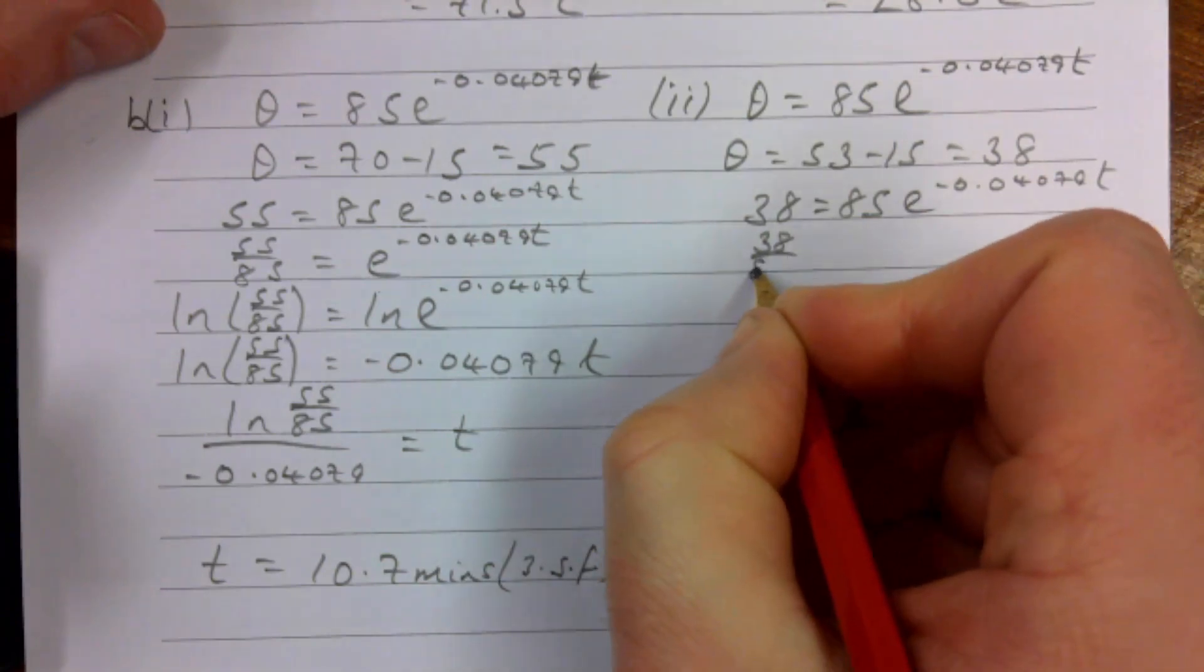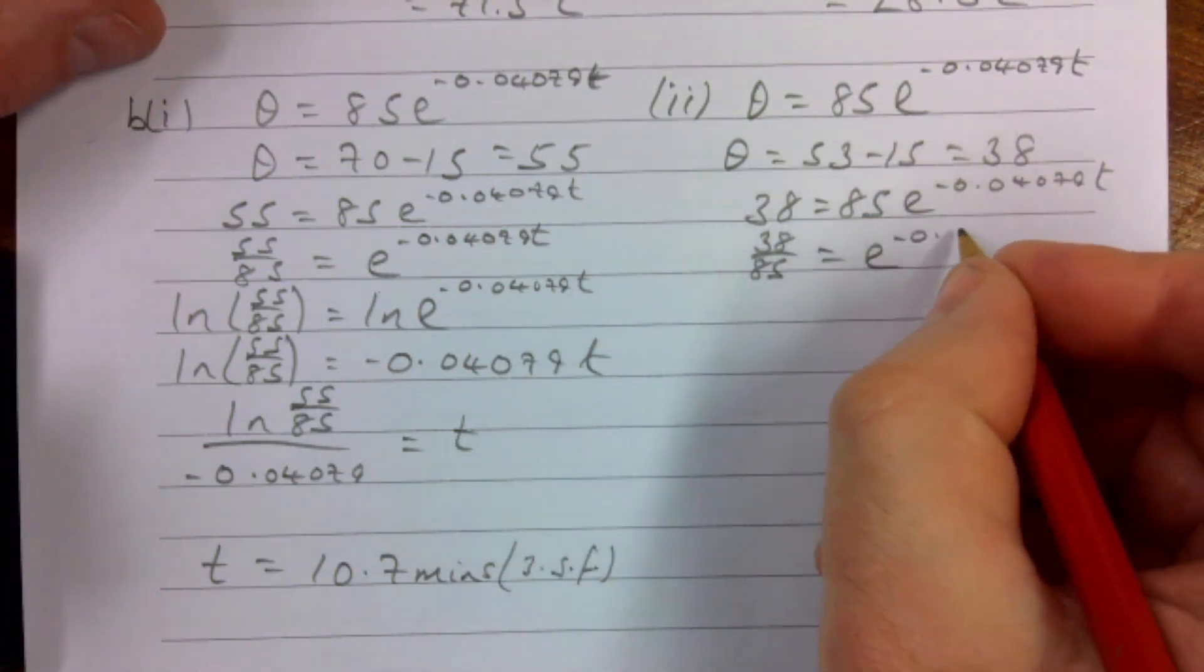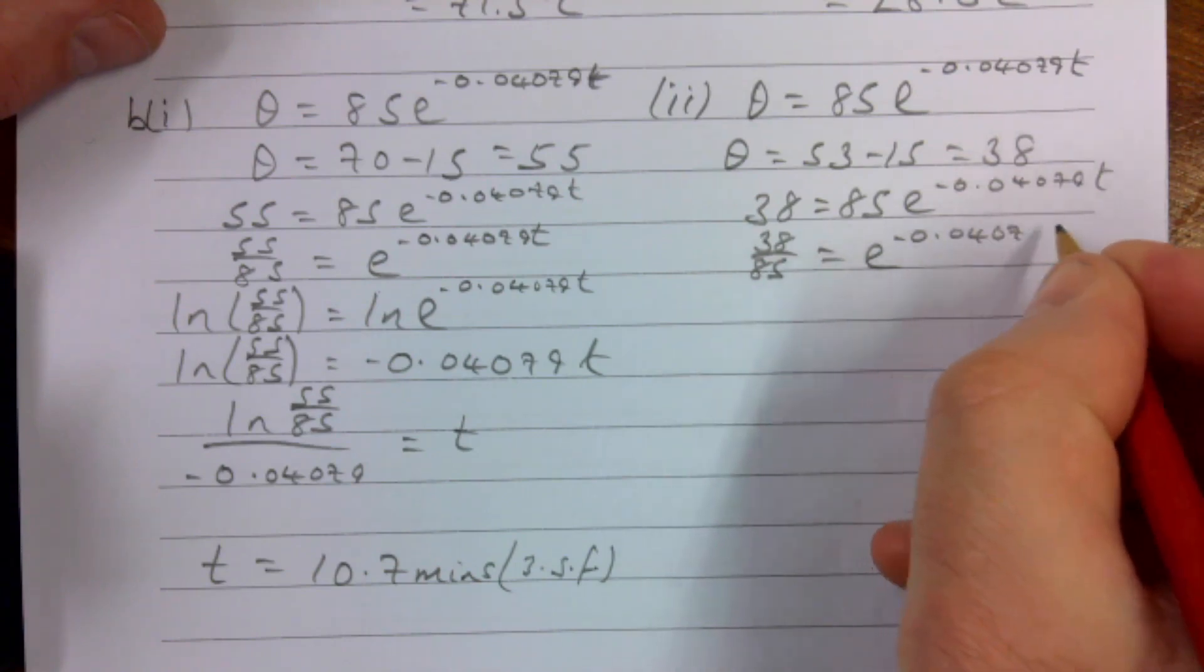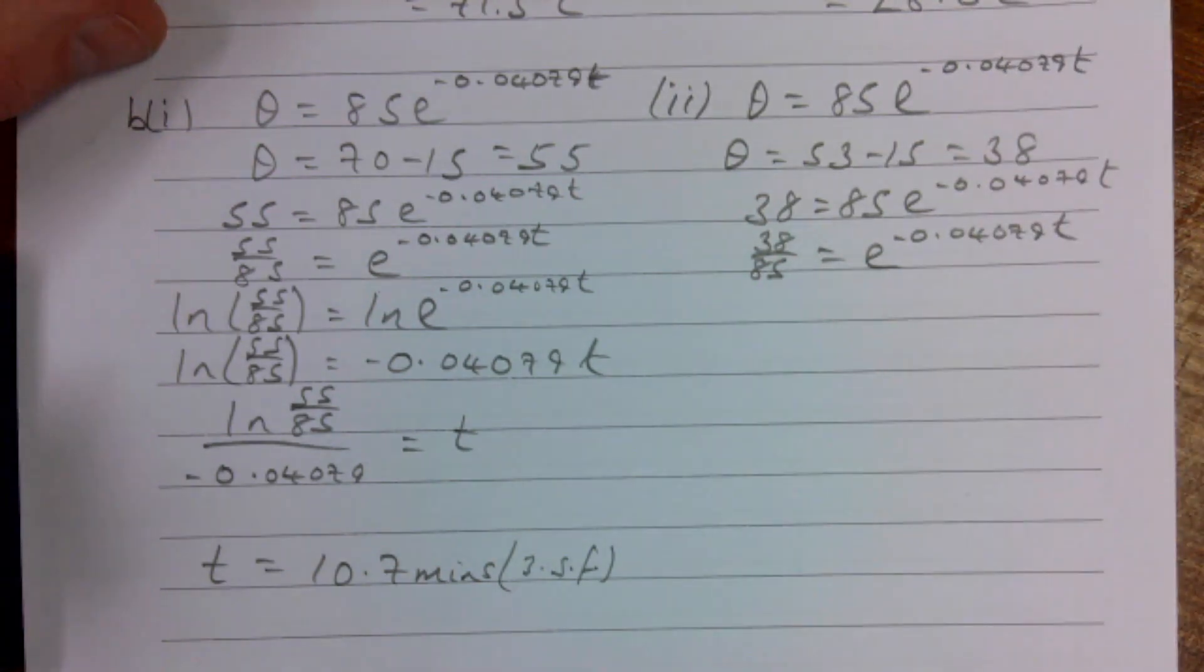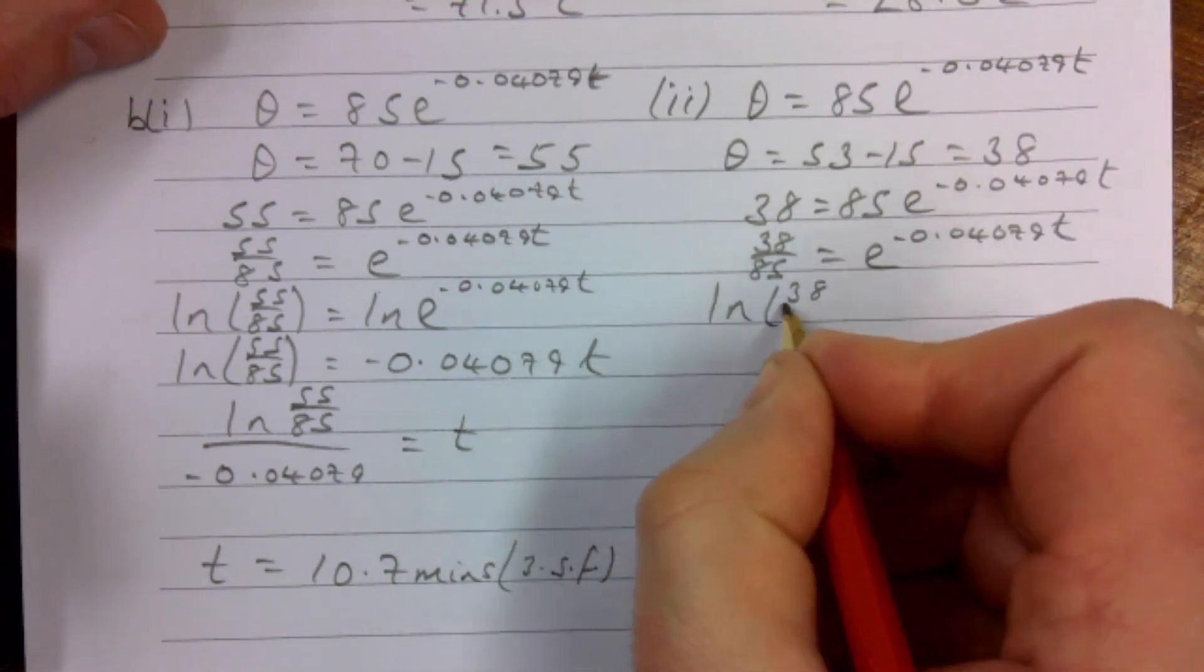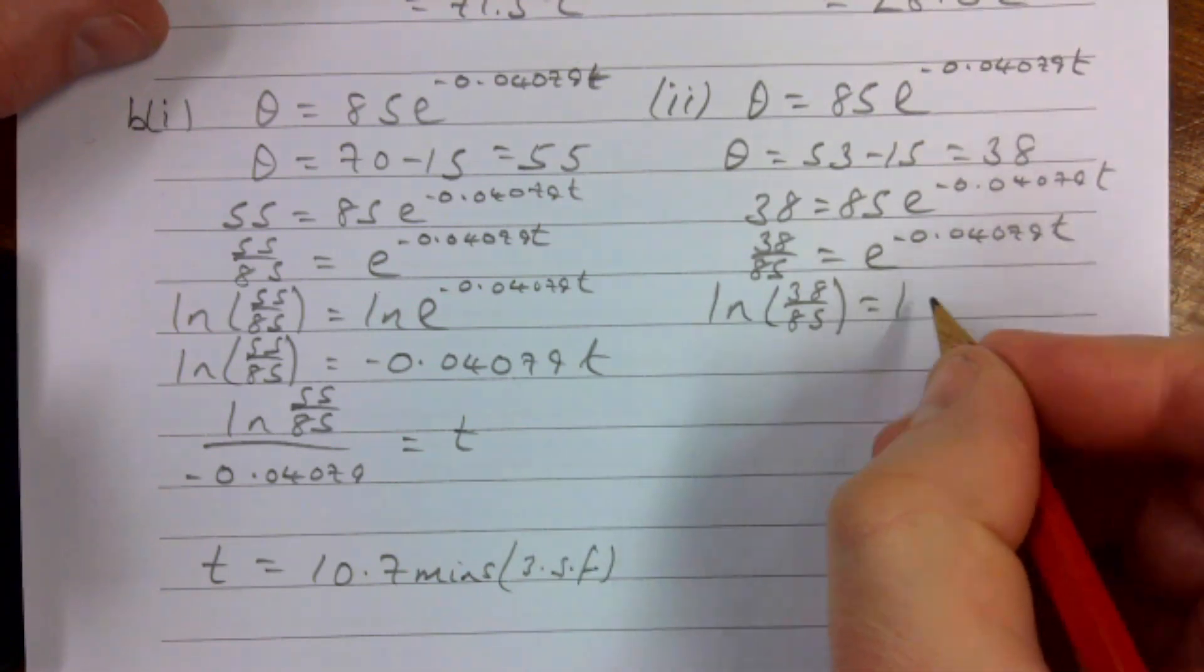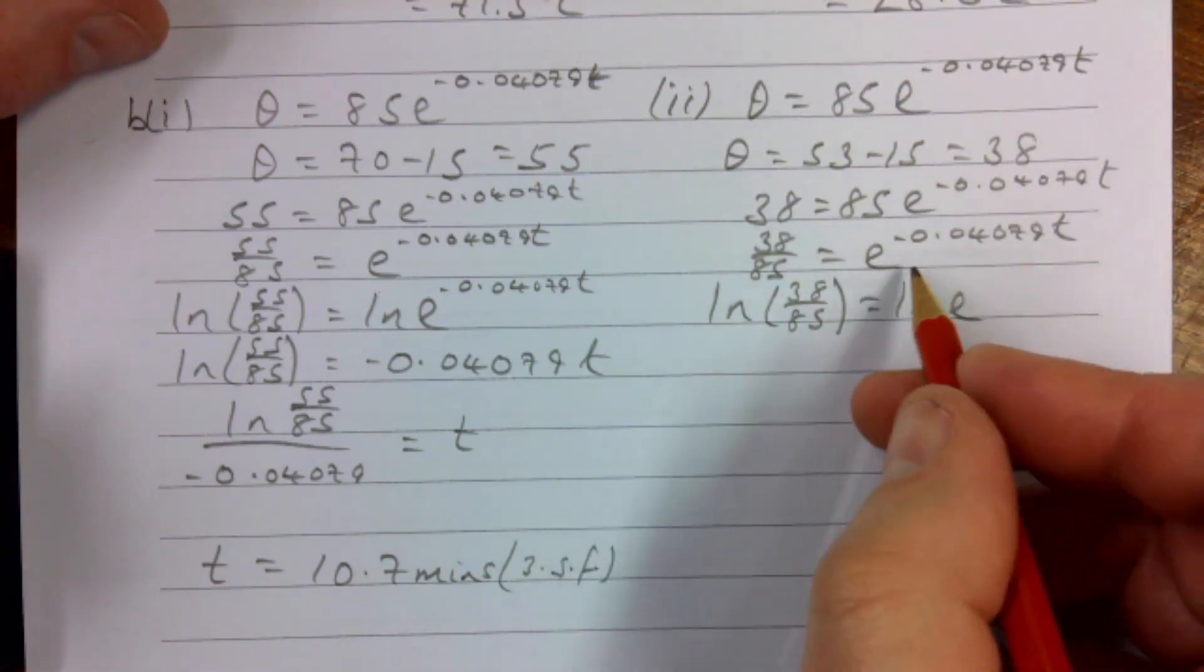38/85. Logs of both sides, natural log of course. LN(38/85). You could use regular log but it just makes your life slightly tougher. The LN goes very well with the E.